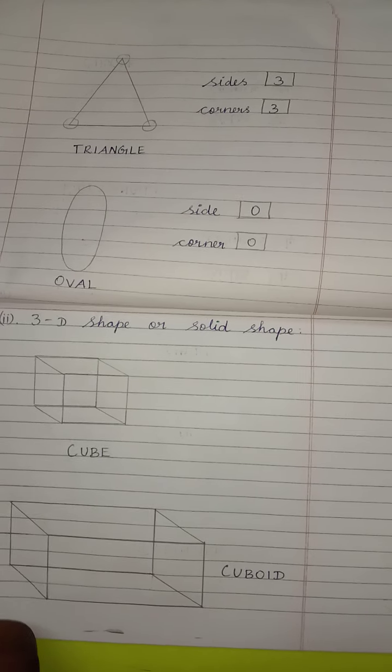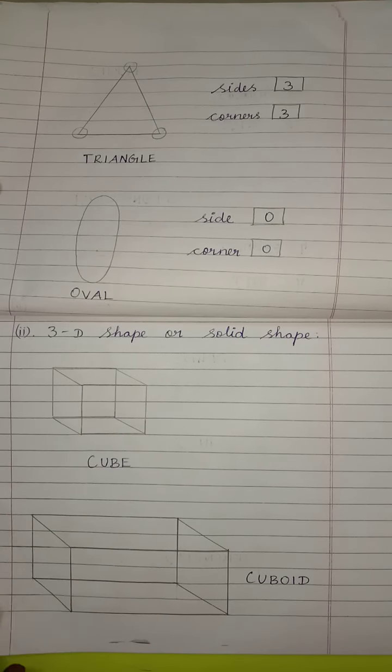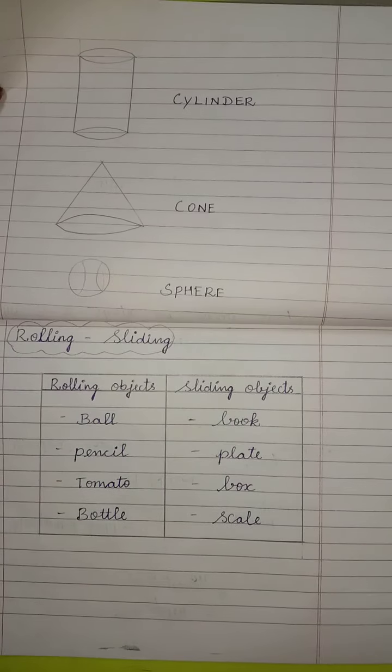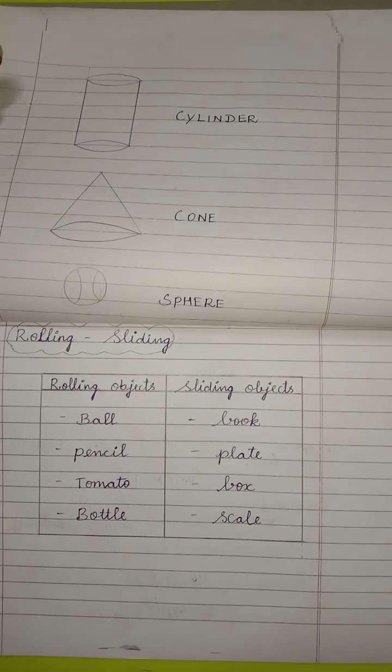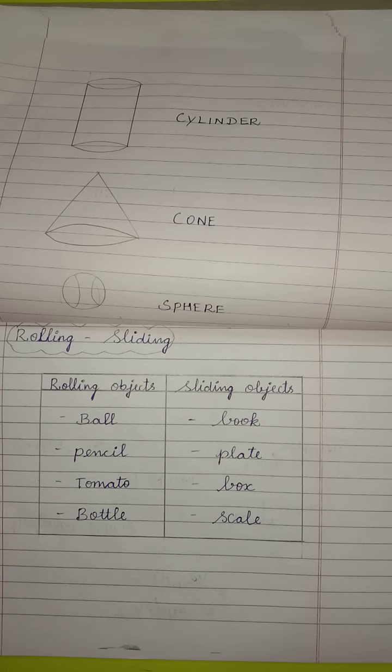So, children, today's homework. You have to write 3D shape or solid shape. Then, rolling, sliding. Write your handwriting neatly children. And, learn the topics. See you next class. Thank you.